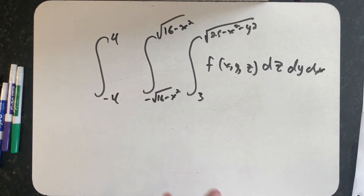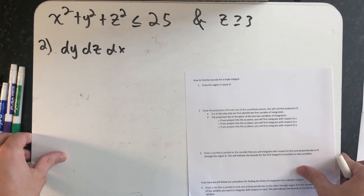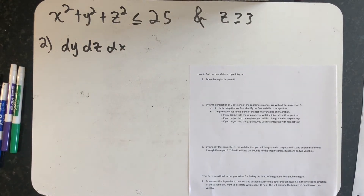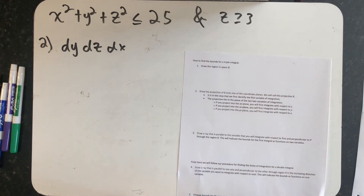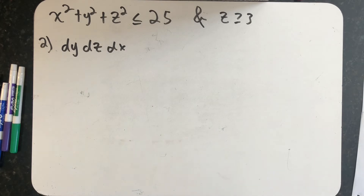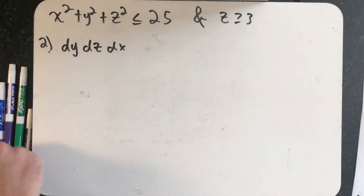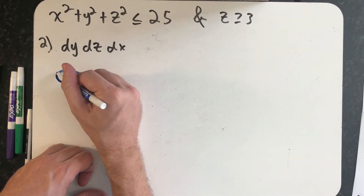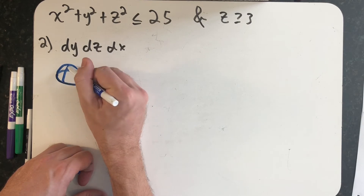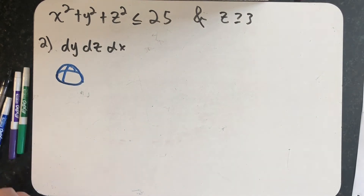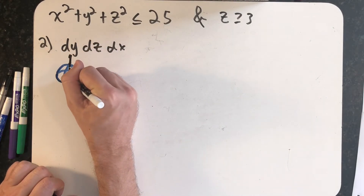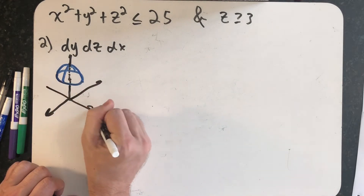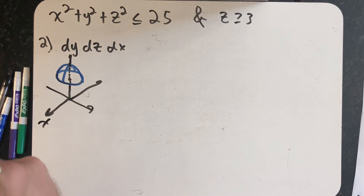Now approach the problem with the second order of integration: dy dz dx. The same procedure applies, starting by drawing region B again. The region is still the spherical cap above the plane z equals 3 and below the sphere. Adding the z-axis, x-axis, and y-axis, there is region B in space.